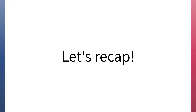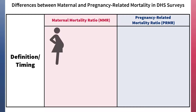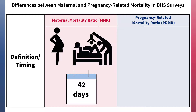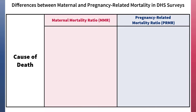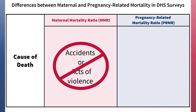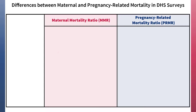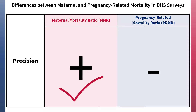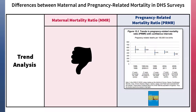Let's recap the differences between maternal and pregnancy-related mortality in DHS surveys. The definition of MMR covers deaths during pregnancy, childbirth, or within 42 days of delivery or end of pregnancy, while PRMR covers deaths during pregnancy, childbirth, or within 2 months of delivery or end of pregnancy. With MMR, maternal deaths due to accidents or acts of violence are excluded; in contrast, PRMR includes all maternal deaths irrespective of cause. MMR is more precise and is the preferred point estimate of maternal mortality, while PRMR is less precise. MMR is not comparable to DHS surveys conducted prior to late 2015; conversely, PRMR is comparable to previous surveys and is shown to allow for trend interpretation.